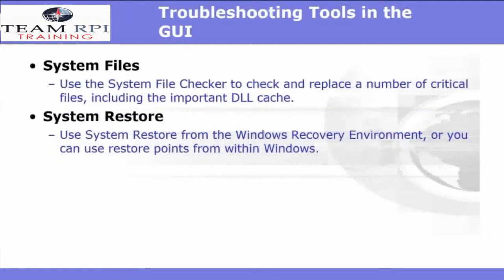Sometimes you'll find that system files are the culprit. You'll use the System File Checker to check and replace a number of critical files, including the all-important DLL cache. If you find you need to restore the Windows system, you'll use System Restore from the Windows recovery environment, or you can use restore points from within Windows.